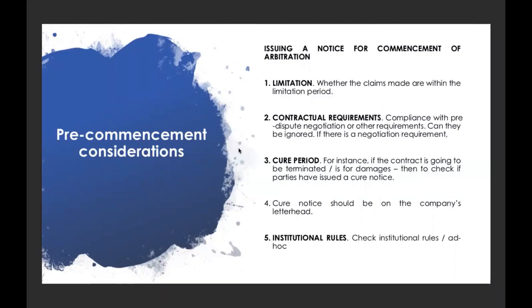Under the Arbitration Act, the Limitation Act is applicable as well. The same limitation periods which apply to suits and other applications are also applicable to arbitration claims. In a suit for damages, it would be 3 years from the day the contract was broken. In a suit for specific performance, it would again be 3 years from the date of breach or when performance was due. In residual cases under Article 113 or 115, it also provides 3 years from whenever the right accrued.